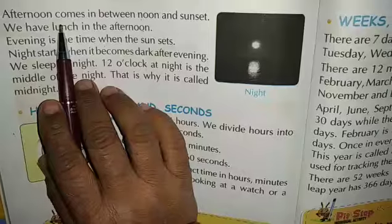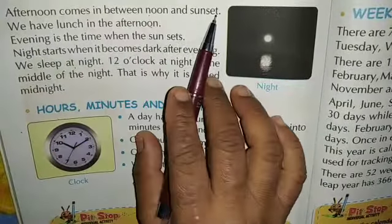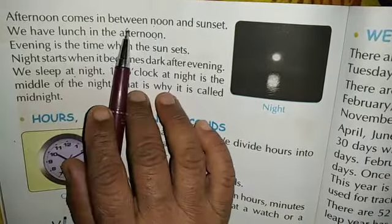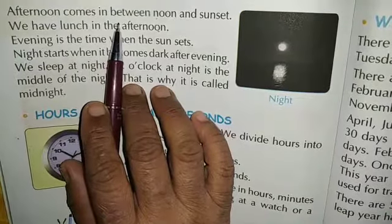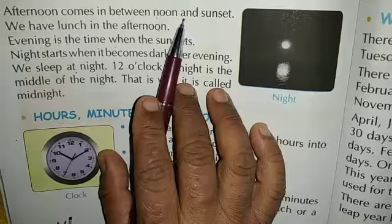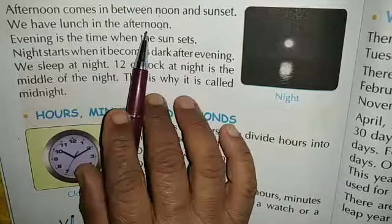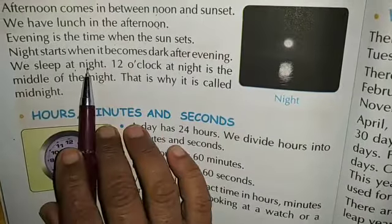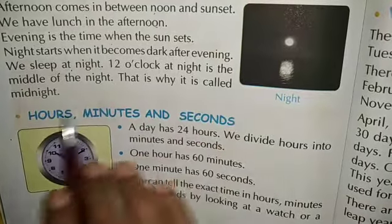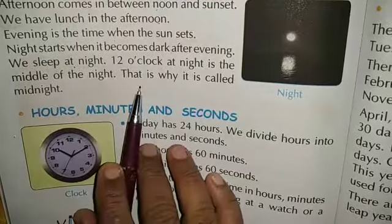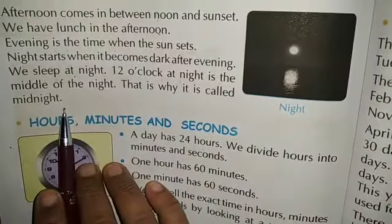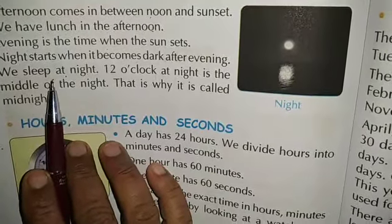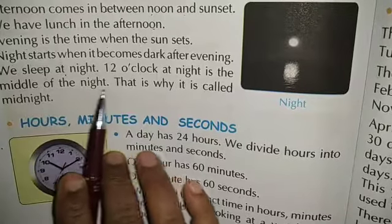Afternoon comes in between noon and sunset — we have lunch in the afternoon. After 12 o'clock it starts afternoon, and till sunset it is called afternoon. Evening is the time when the sun sets. We sleep at night, and 12 o'clock at night is the middle of the night — that is why it is called midnight.